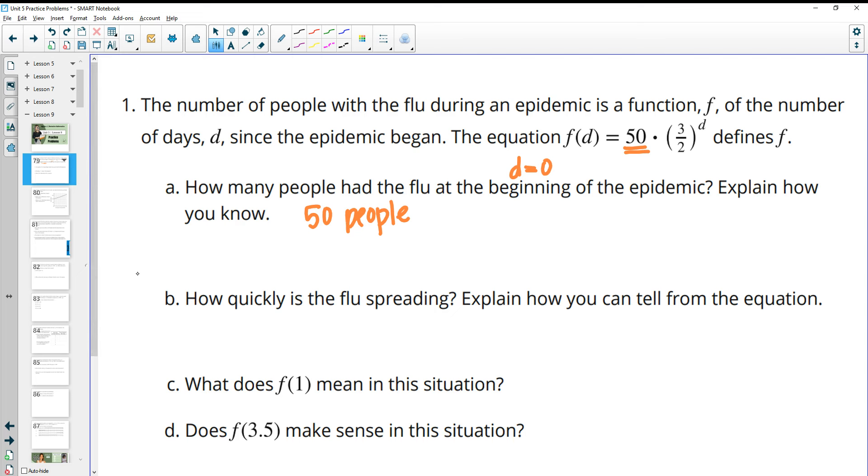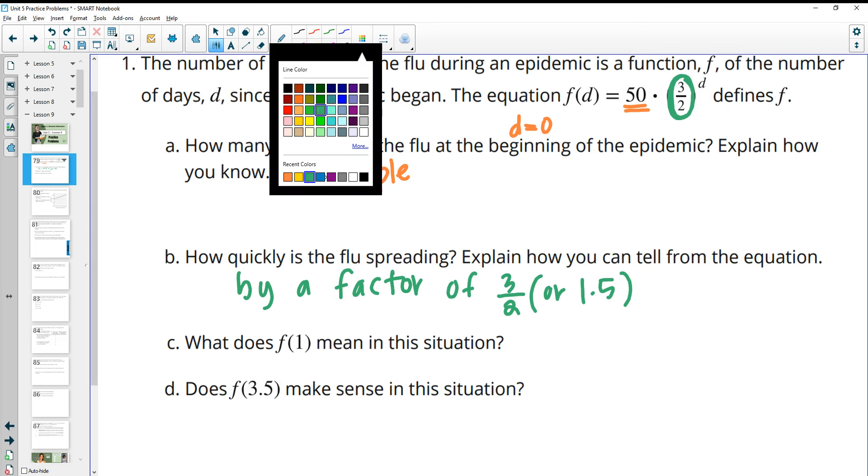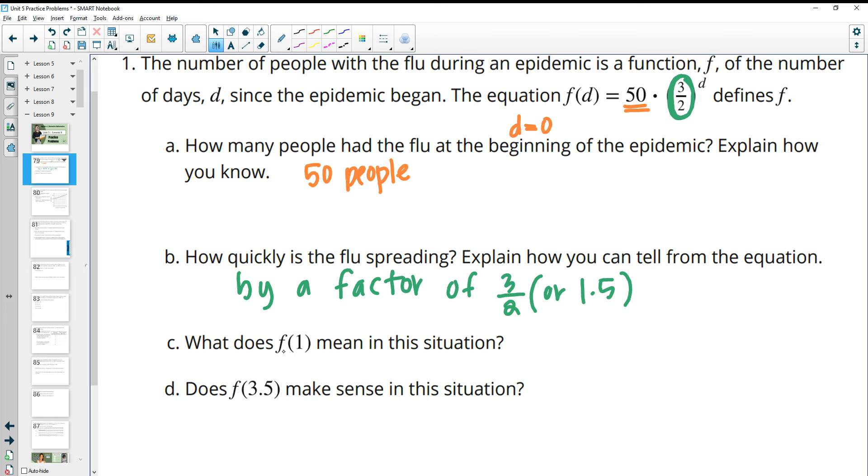So how quickly is the flu spreading and how can we tell from the equation? That's by using this growth factor. The growth factor in here would be how fast this flu is spreading. So you can say it's spreading by 1.5 or 3 halves, by a factor of 3 halves. So I'm just going to put or 1.5 in parentheses if you decided to divide that out.